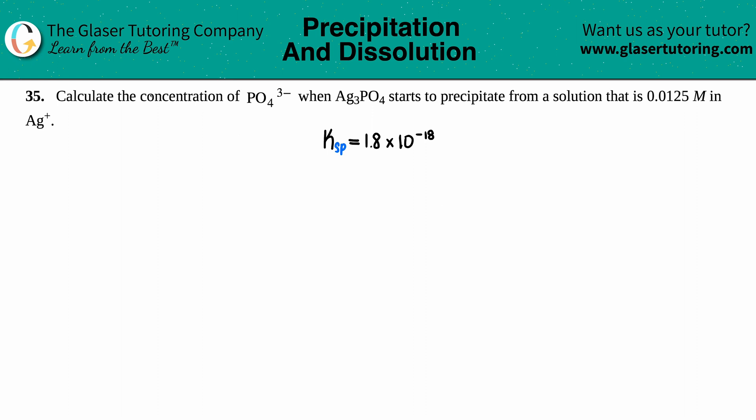Number 35: Calculate the concentration of the phosphate ion PO4³⁻ when Ag3PO4 starts to precipitate from a solution that is 0.0125 molarity in Ag⁺. They gave us a compound Ag3PO4 and they're talking about precipitation, so we know we're dealing with solubilities.